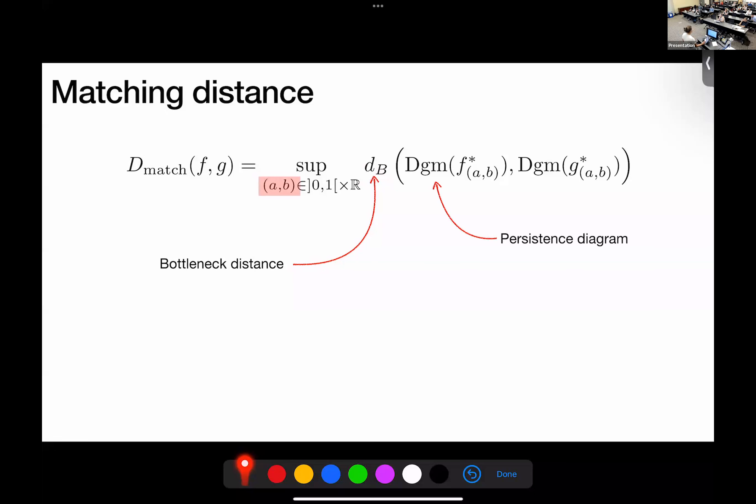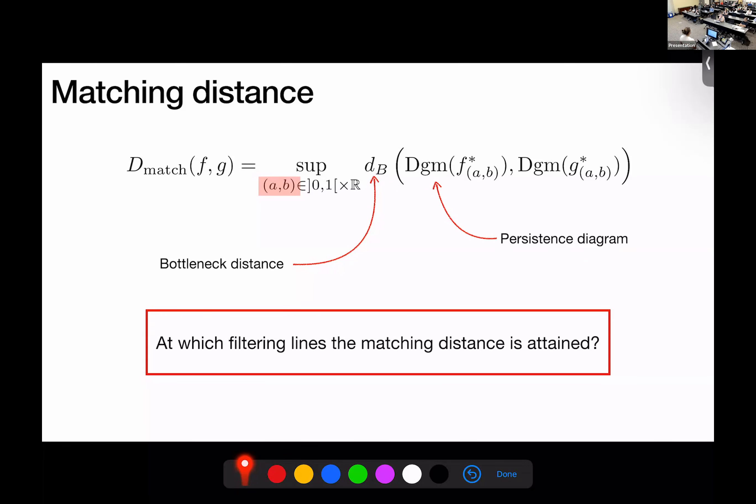So, a question that you might ask is then how computationally feasible is this, since you just said that these lines are infinitely many. So we wonder at which filtering lines actually the matching distance is attained. This is not a new problem. Some people, some other people have worked on that. And there's several effective algorithms to compute it that we are not, today I'm not presenting an algorithm. I'm just trying to tell you qualitatively what are actually the lines that contribute to this, to this metric. So it's not quantitative analysis. More time.